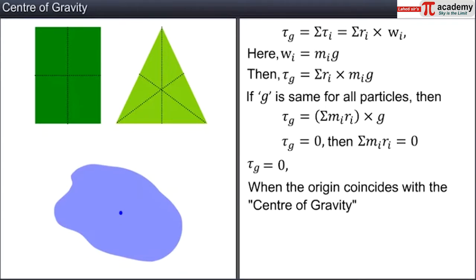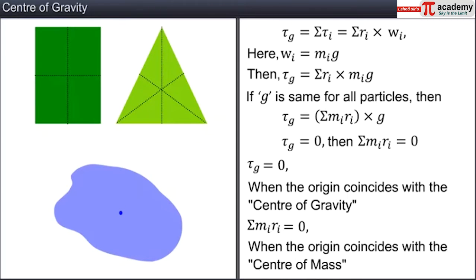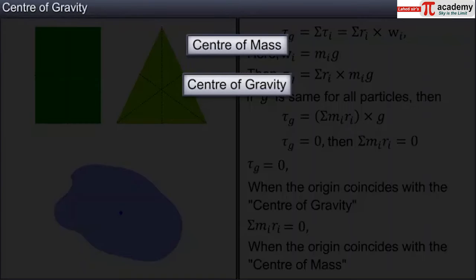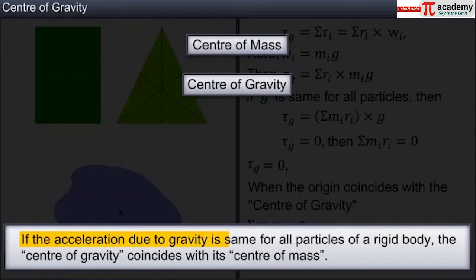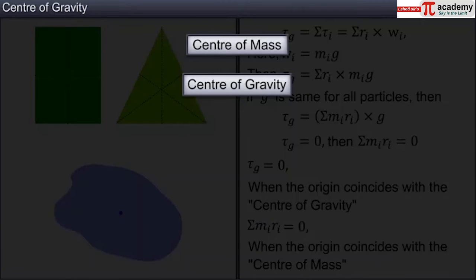Similarly, for a system of particles, sigma mi·ri equals zero only when the origin coincides with the center of mass. Center of mass and center of gravity are two different concepts. If the acceleration due to gravity is the same for all particles of a rigid body, then the center of gravity coincides with its center of mass. For bodies of small size, the methods used to find the center of mass can also be used to find the center of gravity.